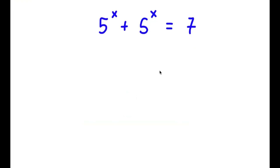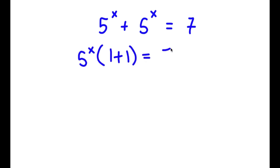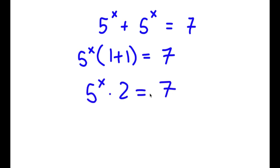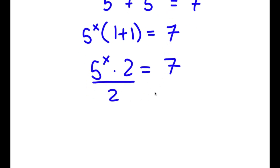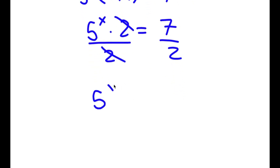In this problem, I have 5 to the power of x plus 5 to the power of x is equal to 7. To solve this, I'm going to first start by factoring out 5 to the power of x. So now I have 5 to the power of x times 1 plus 1 is equal to 7. 1 plus 1 is 2, so I have 5 to the power of x times 2 is equal to 7. Dividing both sides by 2, I get 5 to the power of x is equal to 7 over 2.